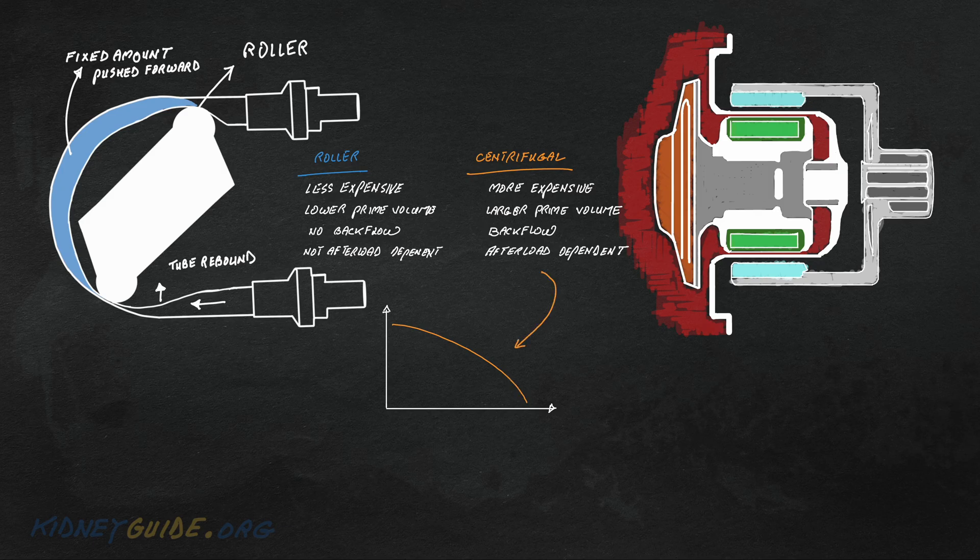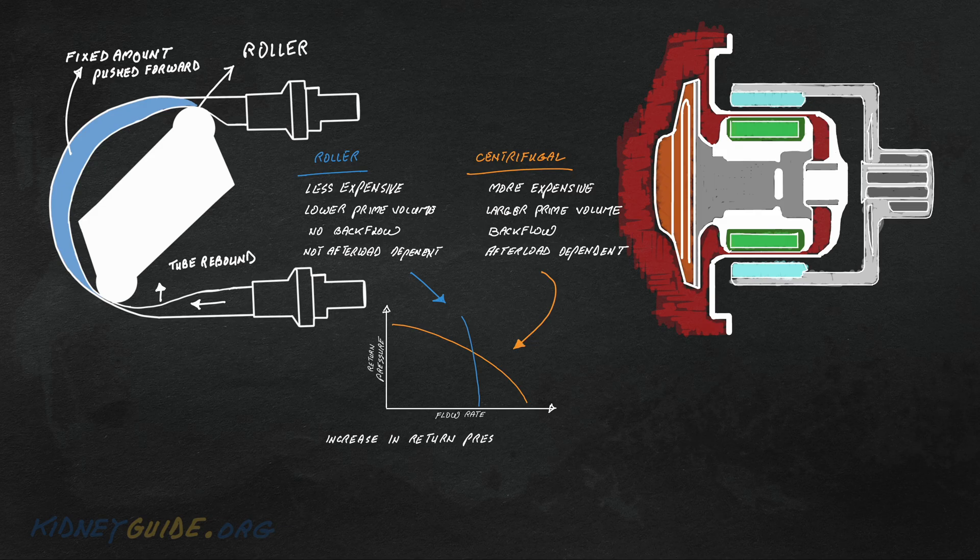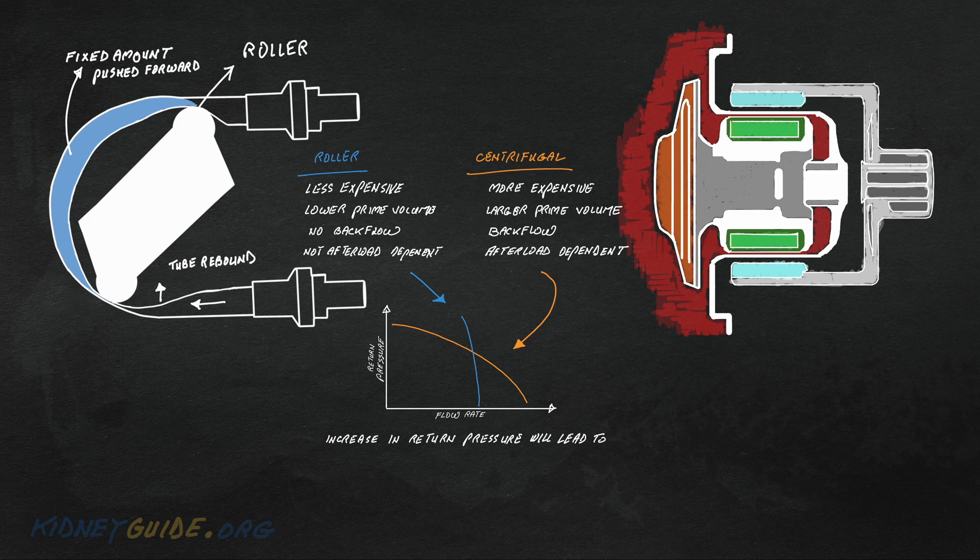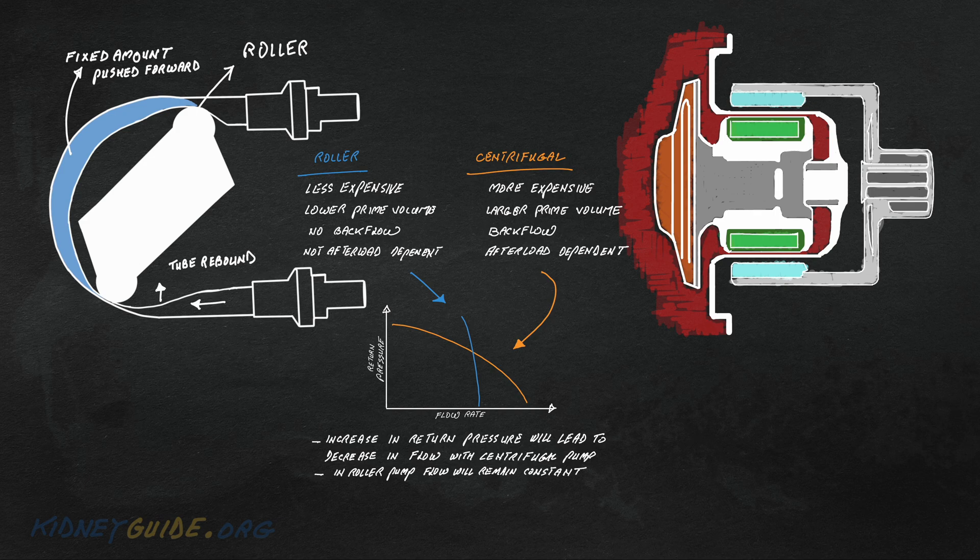Whereas centrifugal pumps are afterload dependent, which is safer in situations where there is a sudden rise in pressure, which then leads to decrease in flow and avoid catastrophic events such as dissection or cannula disconnection.